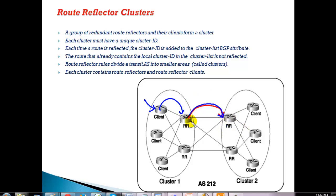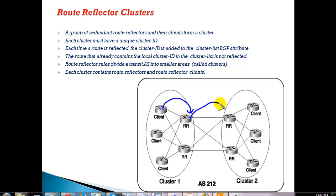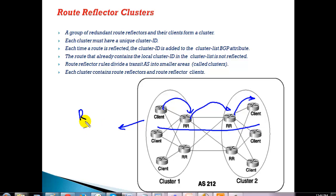The neighborship between the RR servers in different clusters is just like a client-server neighborship. For the inter-cluster RR server relationship, one server acts as a client to the other. Any update from a client updates the local RR server, which then updates the other cluster's RR server, which in turn updates its clients. This way, routes are still exchanged across clusters but we are optimizing the route reflector configuration, which is applicable in a large transit autonomous system.